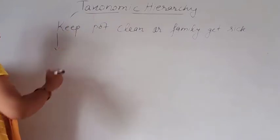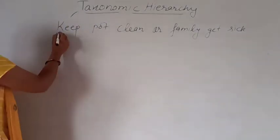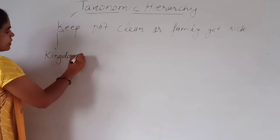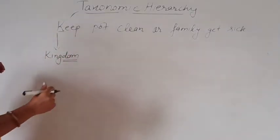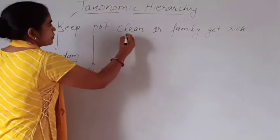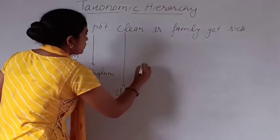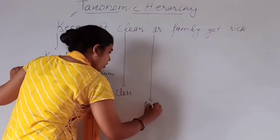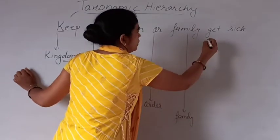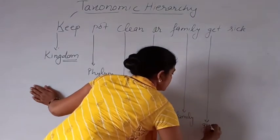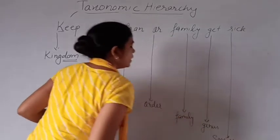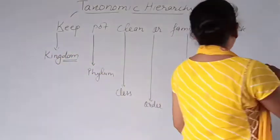From this mnemonic, the different taxonomic categories are: K stands for Kingdom — the highest category of classification. P stands for Phylum. C stands for Class. O stands for Order. F stands for Family. G stands for Genus. And S stands for Species — the smallest category and basic unit of classification.